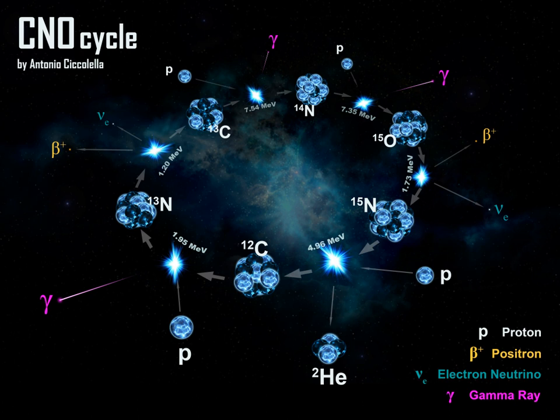In a minor branch of the above reaction, occurring in the Sun's core 0.04% of the time, the final reaction involving 15 7 N shown above does not produce carbon-12 and an alpha particle, but instead produces oxygen-16 and a photon and continues 15 7 N to 16 8 O to 17 9 F to 17 8 O to 14 7 N to 15 8 O to 15 7 N.